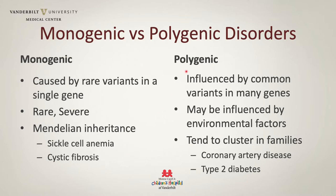In contrast, diseases that we think of as polygenic are influenced by common variants in many genes, often with relatively smaller genetic effects. These are also often influenced by environmental factors, and they tend to cluster in families but not have a strict Mendelian pattern of inheritance. Some examples of polygenic diseases are coronary artery disease and type 2 diabetes.